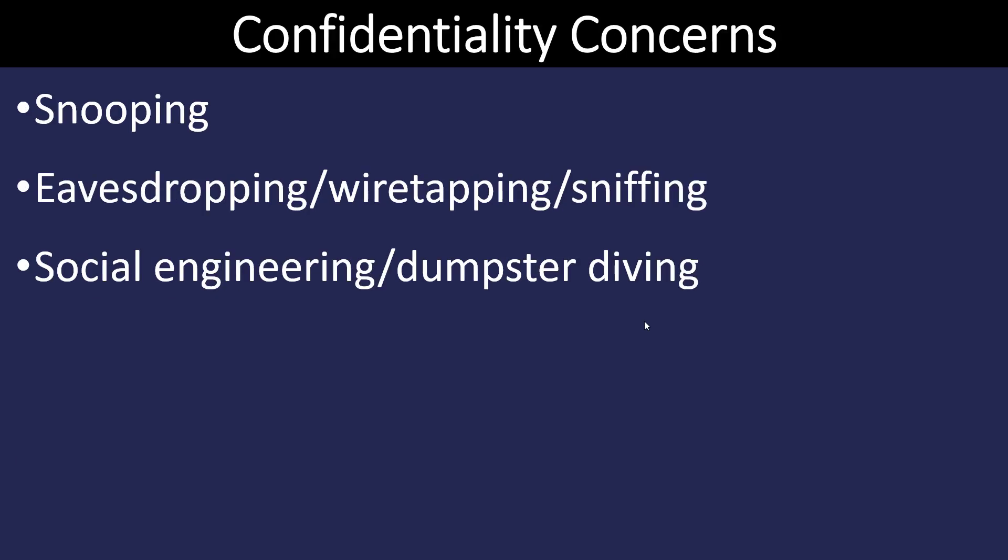Confidentiality means that we want to make sure that the information we have, no one else can look at it or understand it. That sometimes may be called snooping or eavesdropping on a conversation. Frequently, bad actors will use social engineering techniques, such as dumpster diving — looking through the trash — to try and find confidential information. In the computer world, our main tool for maintaining confidentiality is going to be encryption.